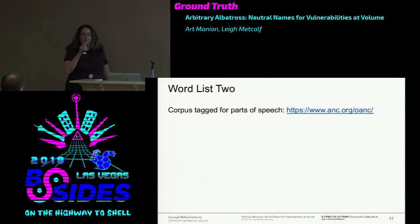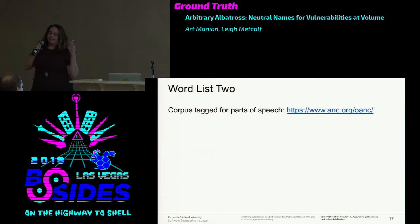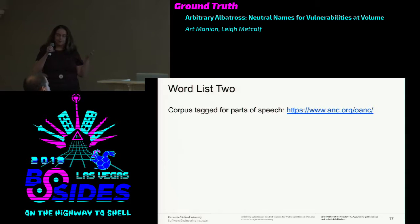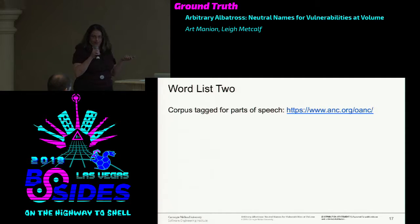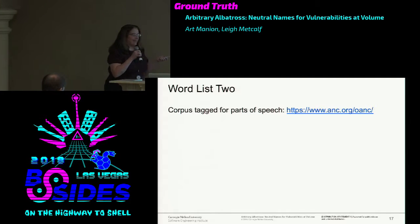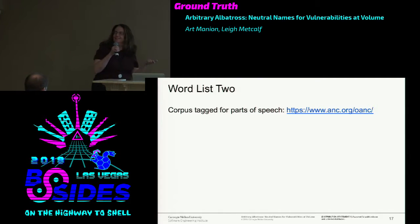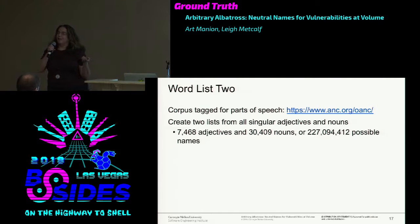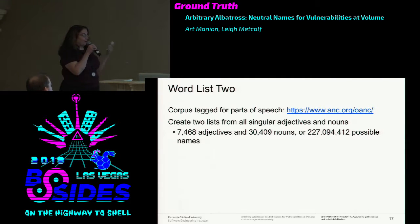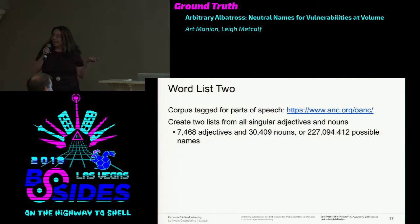I went to Wordless 2 and looked at natural language processing. These people set up corpora where they tag what all the words are. I found a website with a corpus I could download—a lot of people want you to pay for it, and I had no money for this project. I created a two-word list of singular adjectives and nouns: 7,500 adjectives and 30,000 nouns. We're still at a pretty good number of vulnerabilities to tag—we don't have that many yet.